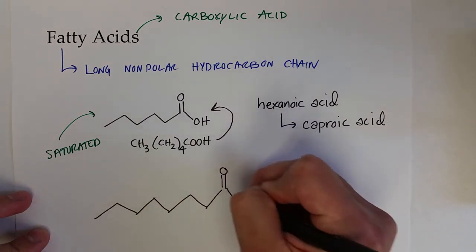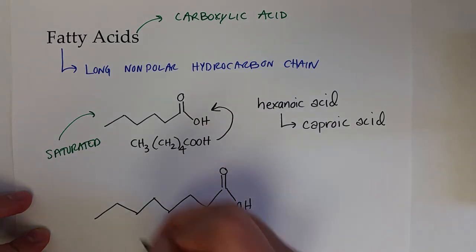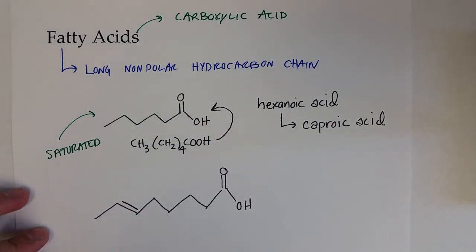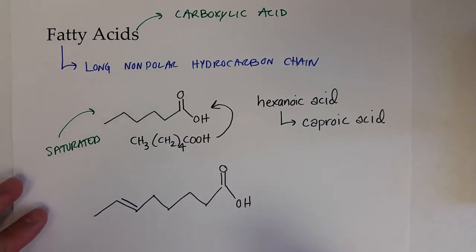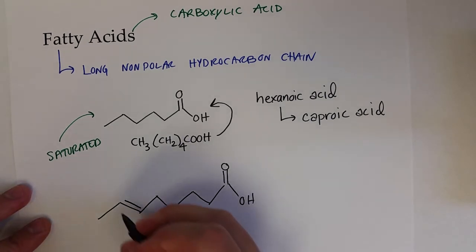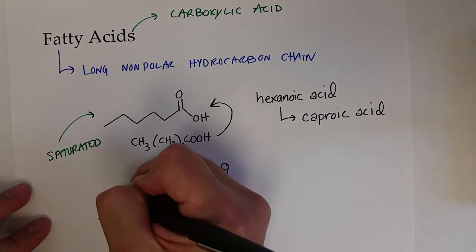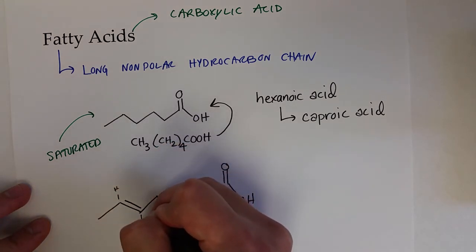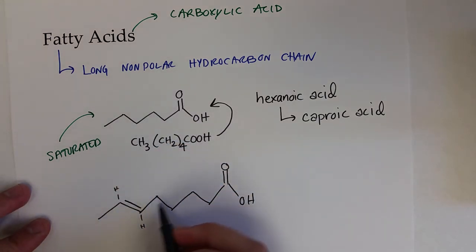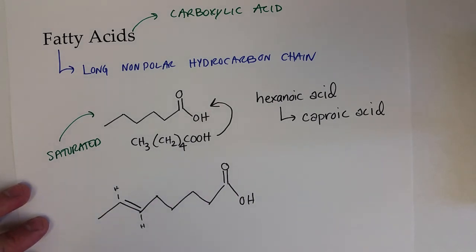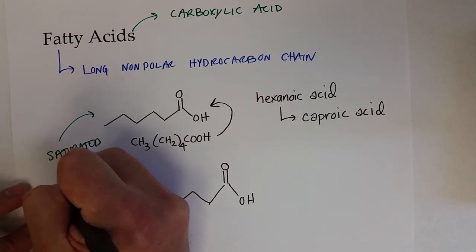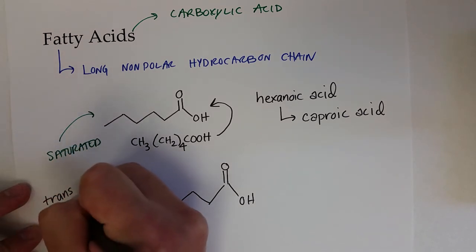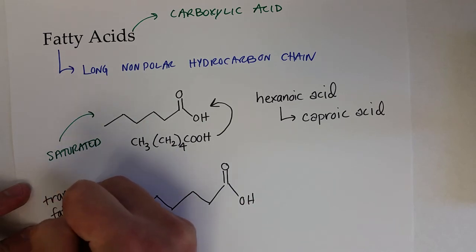If I drew this fatty acid and put a double bond there, obviously that turns it into a fatty acid. And since I drew it in this fashion, where I have the hydrogens and the alkyl groups on opposite sides of the double bonds, this is a trans fatty acid.